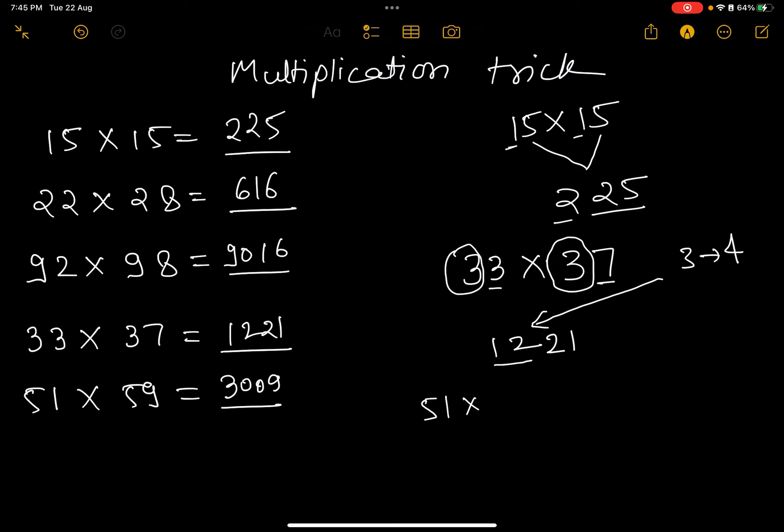1×9 equals 9. The next digit to 5 is 6, and 5×6 equals 30, so the answer is 3009.